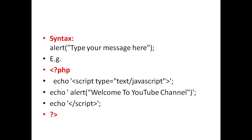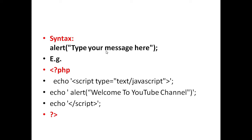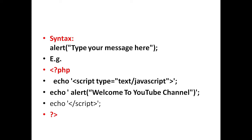The general syntax for an alert box is: alert('your message here'). For example: alert('Welcome to YouTube channel').